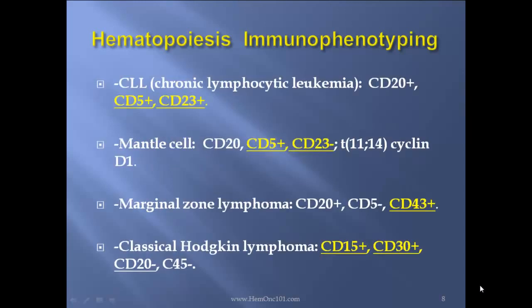CLL — chronic lymphocytic leukemia — will be CD20 positive, CD5 positive, CD23 positive. Mantle cell would be CD20 positive, CD5 positive, but CD23 negative, and will have translocation 11;14 cyclin D1. Marginal zone lymphoma will be CD20 positive, CD5 negative, and importantly CD43 positive. Classic Hodgkin's will be CD15 positive and CD30 positive, CD20 negative.